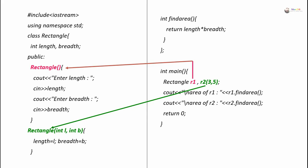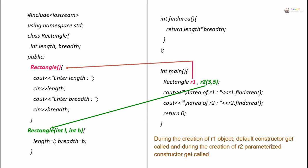Next, we call the FindArea method for both objects R1 and R2, and the result is displayed using the cout statement. During the creation of R1 the default constructor is called, and during the creation of R2 the parameterized constructor is called.